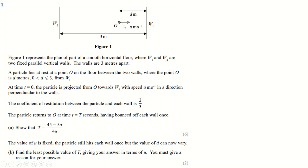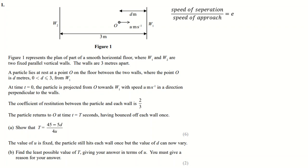So you've got these two walls three metres apart, you're projecting an object from this point here at speed U. It's going to hit this wall, hit all the way back to the other wall, and then come back again. You want to find the time it takes to get all the way back. The coefficient of restitution on each wall is two-thirds. The speed of separation over speed of approach equals that coefficient E.